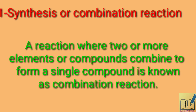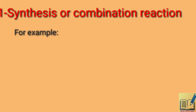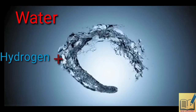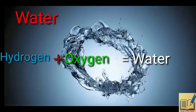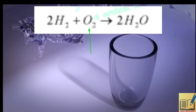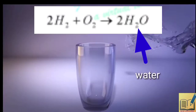What is this? A reaction where two or more elements or compounds combine to form a single compound is known as a combination reaction. For example, suppose we have element X and element Y — when these two are combined, the product is XY. A daily life example is water, in which hydrogen combines with oxygen to form water. That means hydrogen (H₂) and oxygen (O₂) combine to form H₂O, which is water.